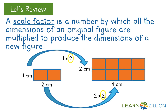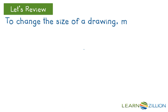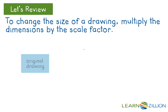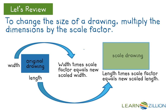Notice the unit of measures are the same, and also notice how the area has changed. To change the size of a drawing, multiply the dimensions by the scale factor. The dimensions are the length and width. To generate a scale drawing, multiply the width times the scale factor for the new width, and multiply the length by the same scale factor for the new length. The length and width must be multiplied by the same scale factor. The new length and width are the dimensions of the scale drawing. Notice how the area of the scale drawing also changes.